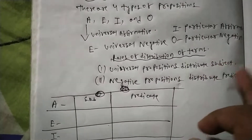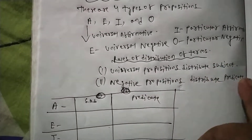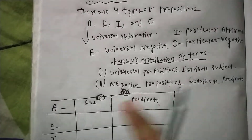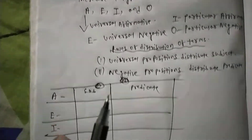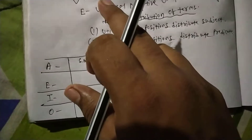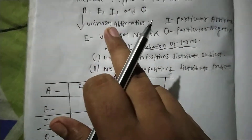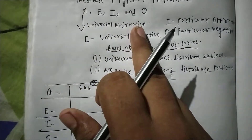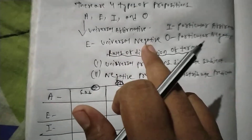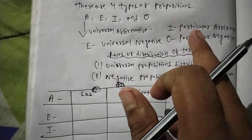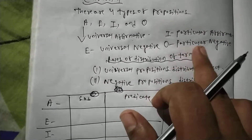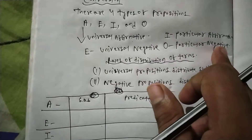Universal propositions distribute subject and negative propositions distribute predicate. We have four kinds of propositions: A proposition, E proposition, I proposition, and O proposition. A proposition is known as Universal Affirmative, E proposition is Universal Negative, I proposition is Particular Affirmative, and O proposition is Particular Negative.